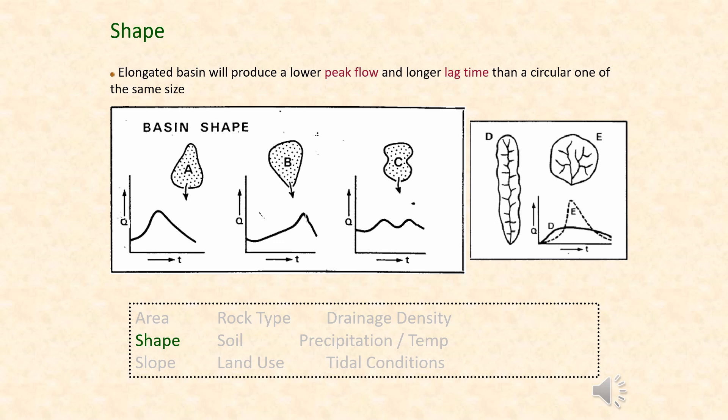A basin with shape C may be less likely to flood because the two peaks occur one after the other, so we don't get the large degree of discharge seen in A and B. Looking at D and E, a long drainage basin will have a very slow peak and water won't reach the river all at the same time, whereas a rounder shape drains much faster and therefore peaks earlier.